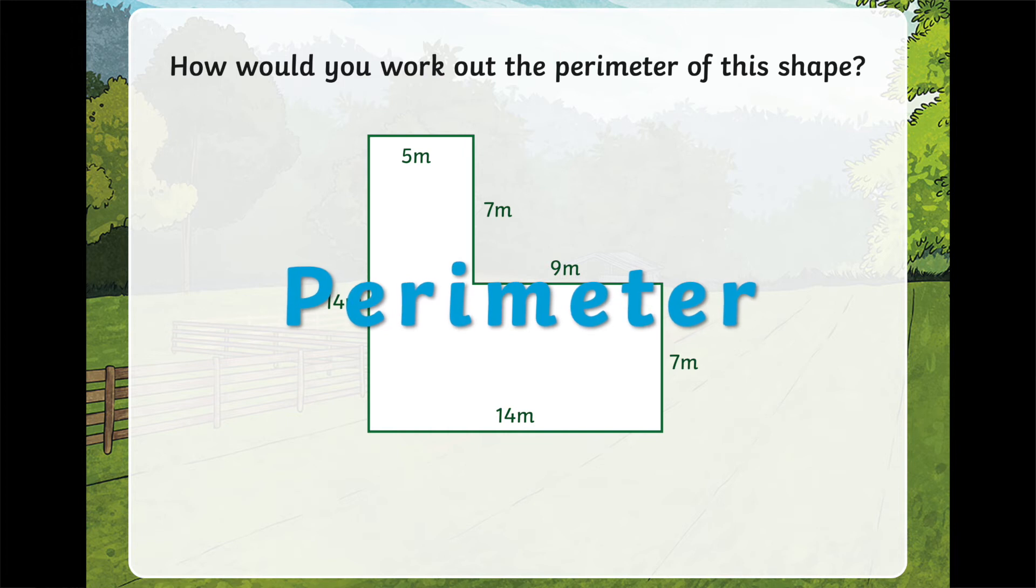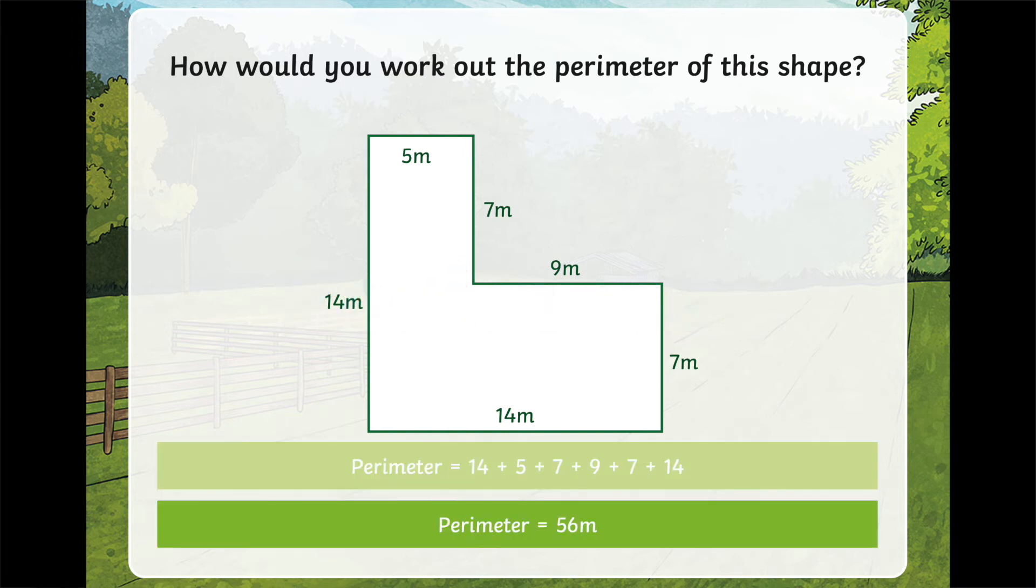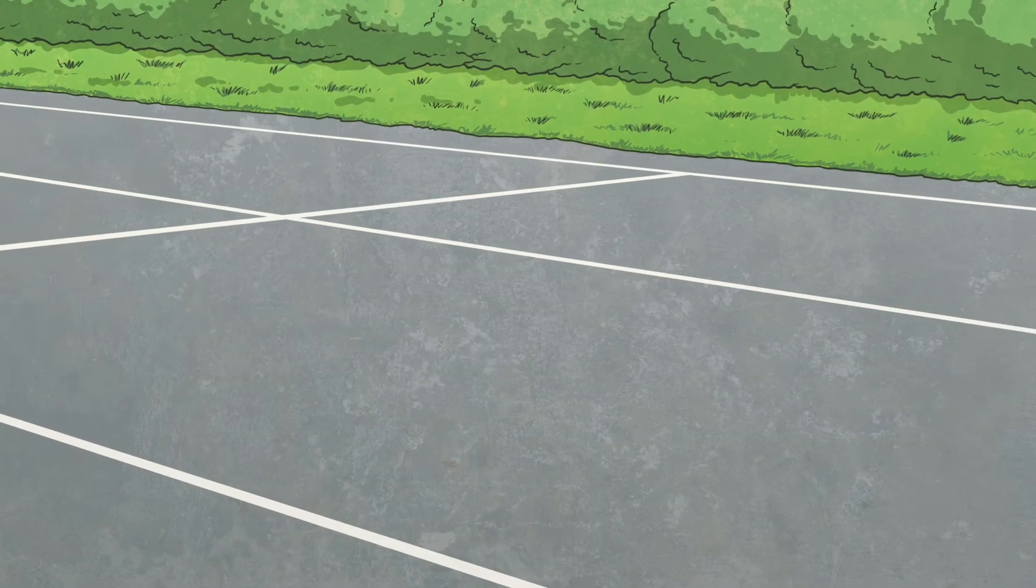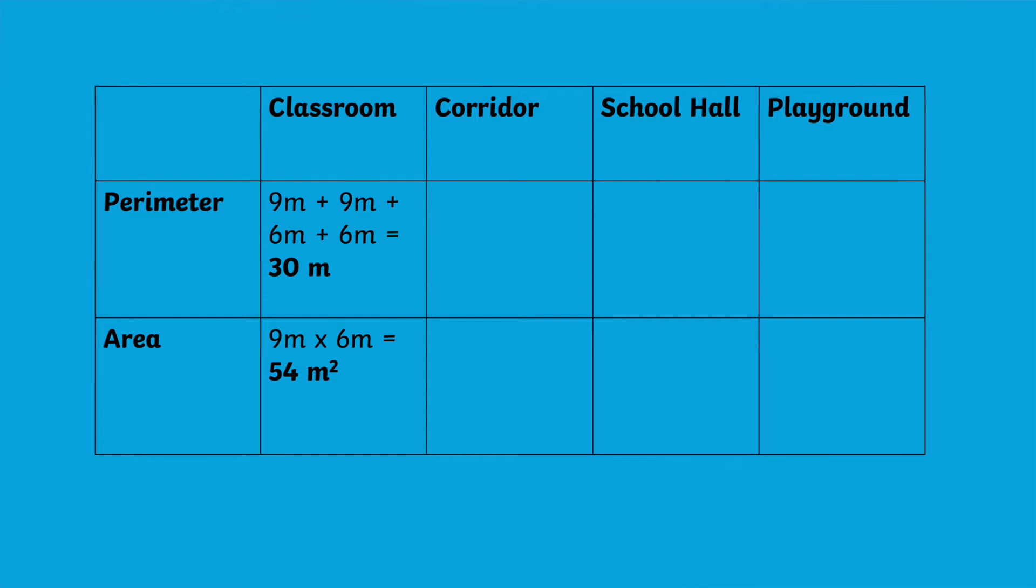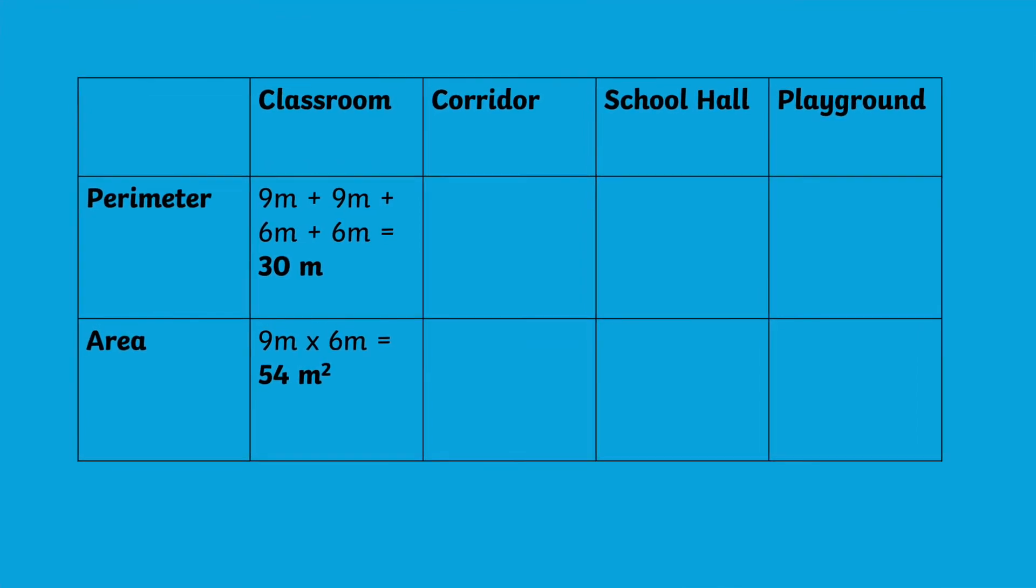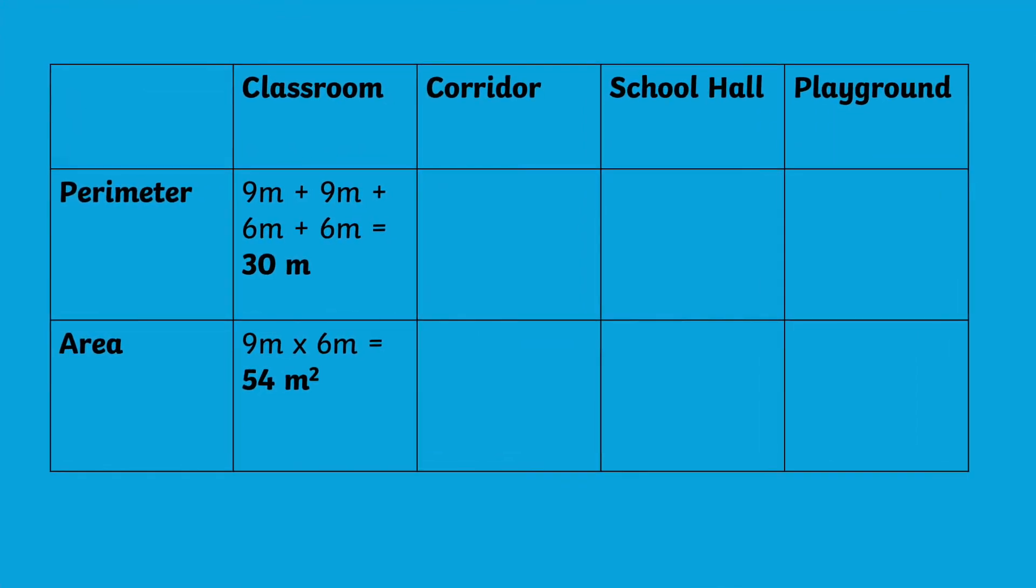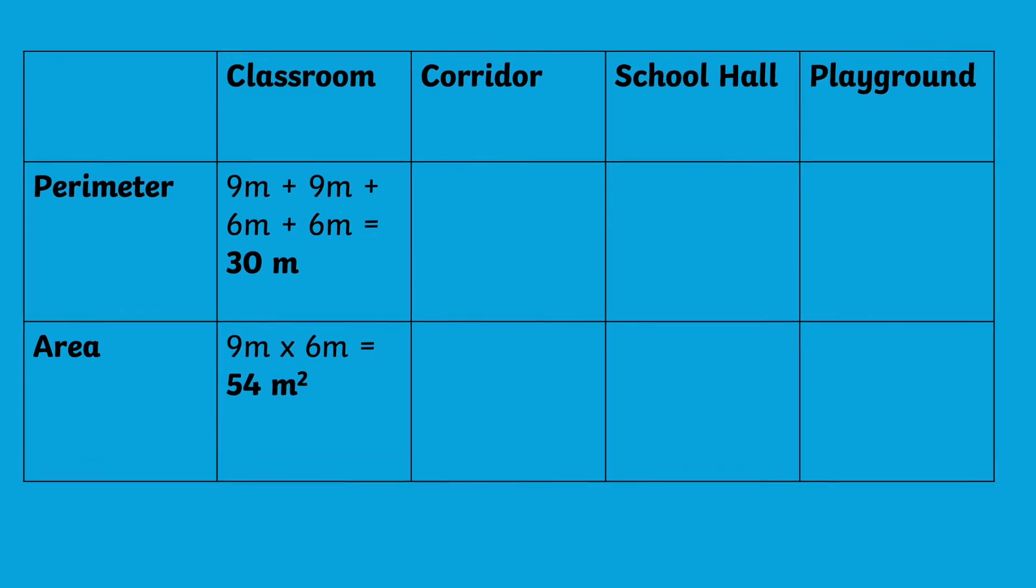The difference is this time we're not counting the inside—we're counting the outside. Grab meter rulers, trundle wheels, and take the children out to the playground, into the school hall, and down the corridors to measure boundaries and add all those sides together to create the perimeter.